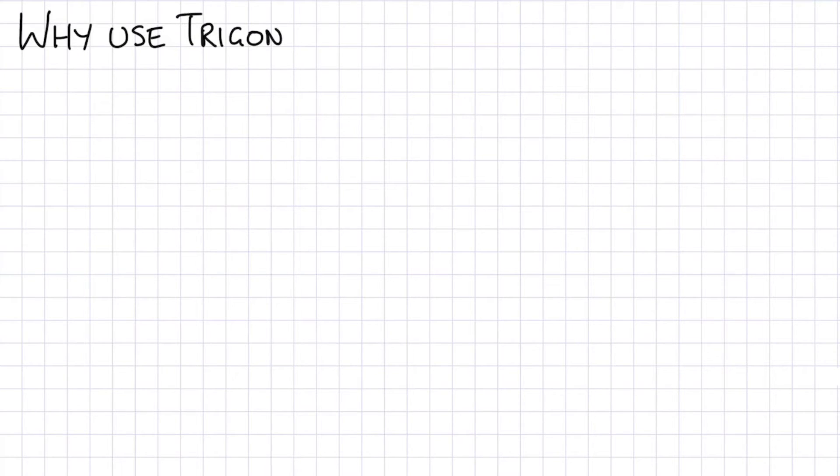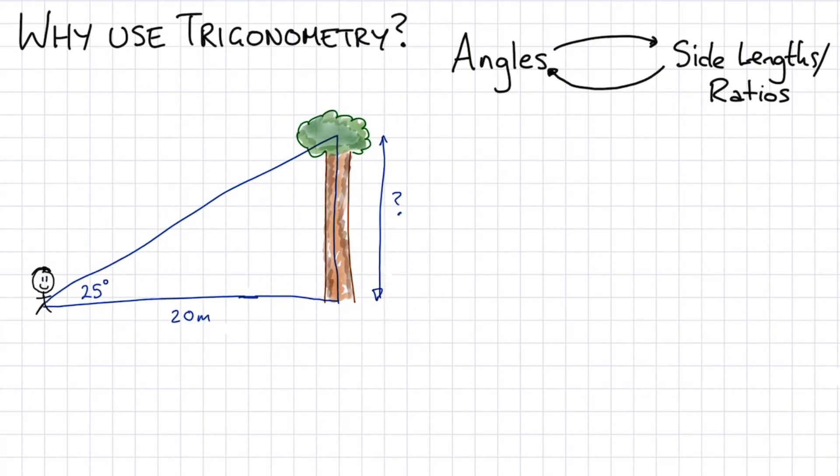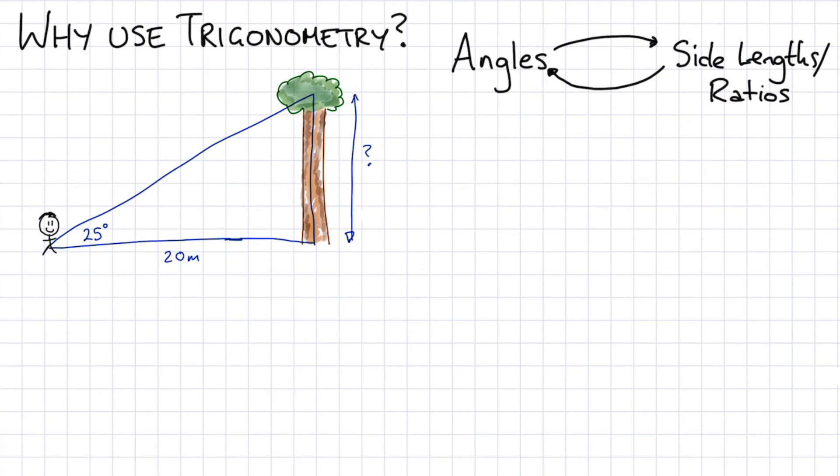So why do we need trigonometry or what's it useful for? This second part of the video I'm going to go through just a few quick examples of why we might use trigonometry. Basically we can convert angles to side lengths or we can work out calculations based on angles to work out side lengths and vice versa. We can use the ratios of the side lengths to work out angles.